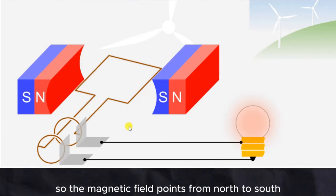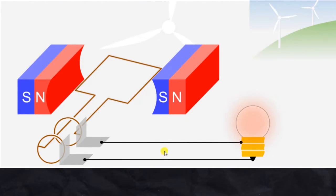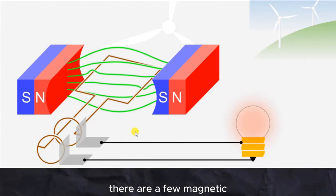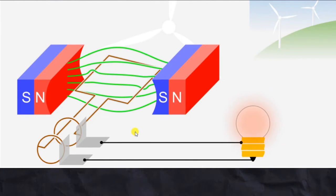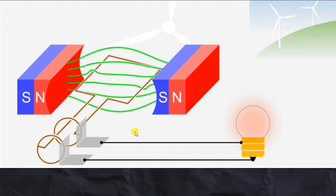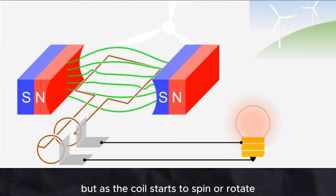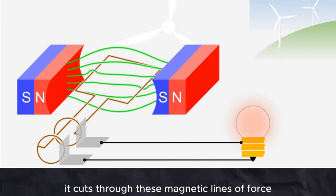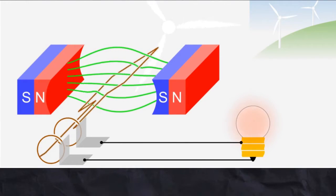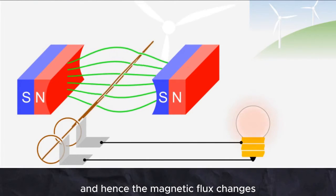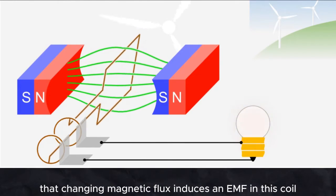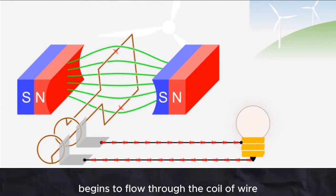The magnetic field points from north to south and the coil of wire is placed such that there are a few magnetic lines of force passing through this coil. But as the coil is stationary, the magnetic flux is not changing. But as the coil starts to spin or rotate due to the mechanical energy provided to it, it cuts through these magnetic lines of force, and hence the magnetic flux changes. That changing magnetic flux induces an EMF in this coil, and hence a current begins to flow through the coil of wire.